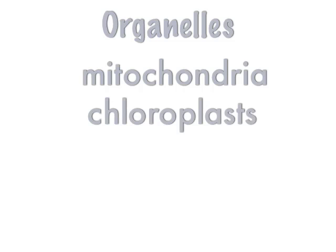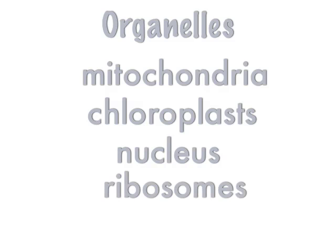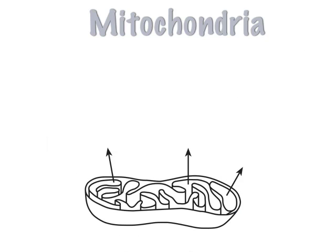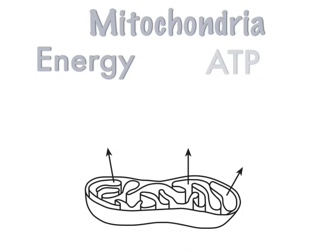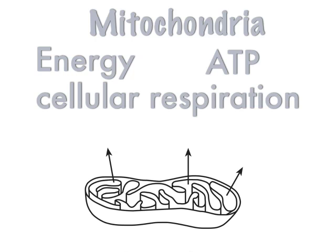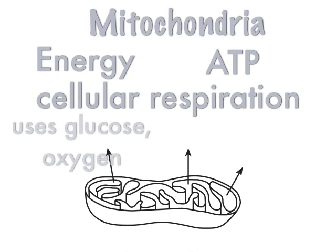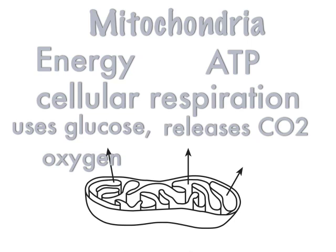Let's go through the famous organelles on the Regents — the top organelles tested are mitochondria, chloroplasts, nucleus, ribosomes, and vacuoles. Starting with mitochondria: there's a picture of a real mitochondria on a Regents. The job of a mitochondria is to give energy to the cell. It produces ATP by a process called cellular respiration, where you use oxygen and glucose to make energy — ATP. It uses glucose and oxygen, and one of the things it releases is CO2.